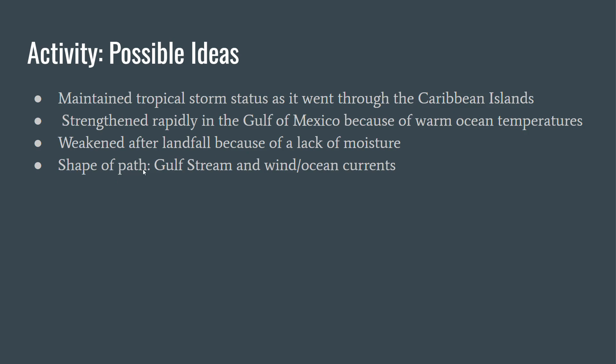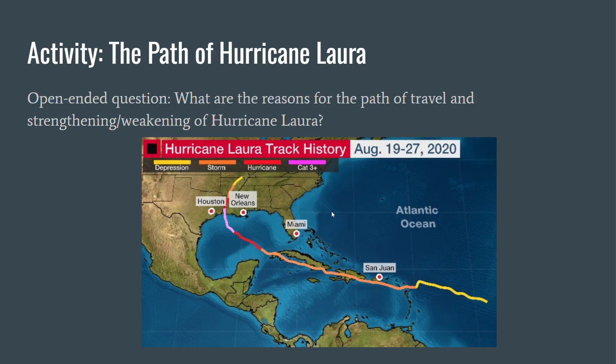Regarding the shape of the path, the Gulf Stream and wind ocean currents affected its trajectory. Looking at where it hits the US, we can see it then weakens as it goes inland.